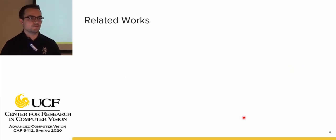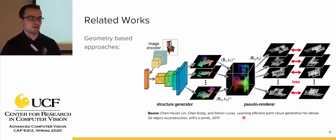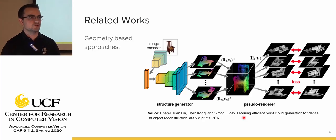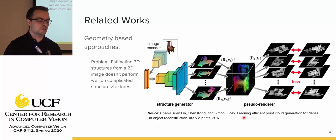There are multiple categories in the related works for Novel View Synthesis. The first category is geometry-based approaches. These take a 2D image, estimate a 3D representation, and then use that 3D representation to develop a 2D novel view. In this example, the paper encodes the 2D image, passes it through a structure generator to generate N viewpoints, forms a 3D point cloud, and uses it to create 2D novel views. The problem is that estimating 3D structure from a 2D image doesn't perform well on complicated textures and structures.